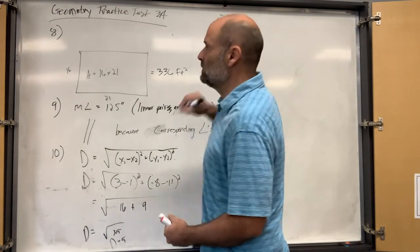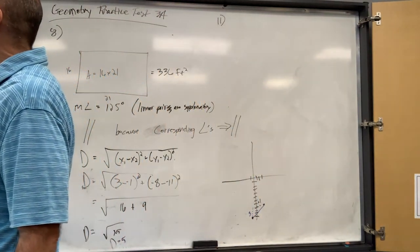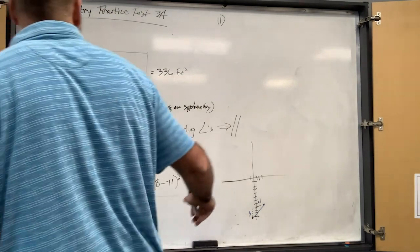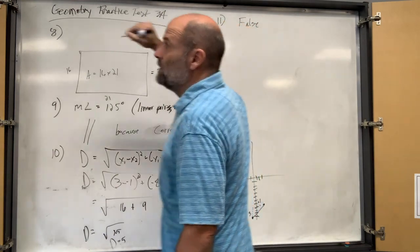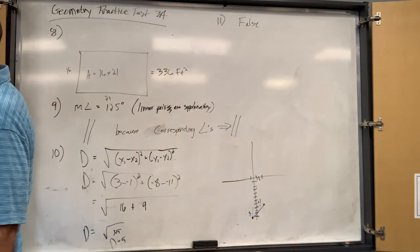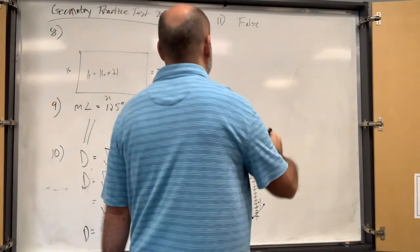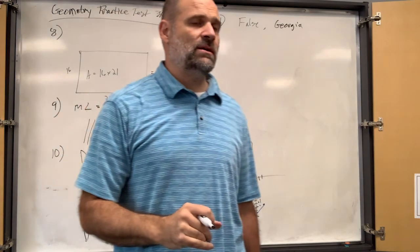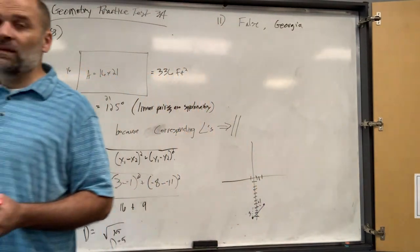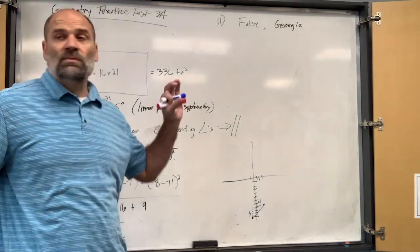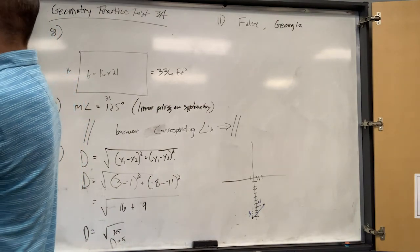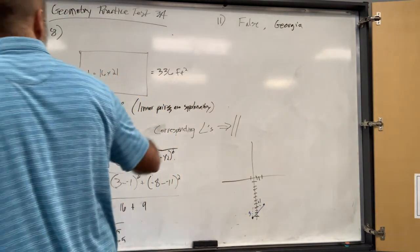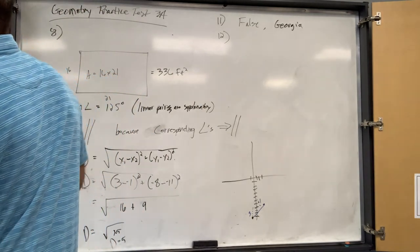Number eleven: determine whether this conditional statement is true — if Jane lives in the USA, then Jane lives in Arizona. That is false. Give a counter-example: Jane lives in Georgia, or any of the other 49 states. On your test it may also ask if the converse is true — if Jane lives in Arizona, then she lives in the USA — and the converse is true.